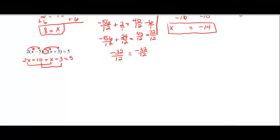So 2x minus x. Let's rewrite this. 2x minus x minus 10 minus 3 equal 5. So now we can rewrite this with our like terms together. So 2x minus x will give us x. Negative 10 minus 3 will give us negative 13, because remember it's plus a negative. And that's equal to 5.